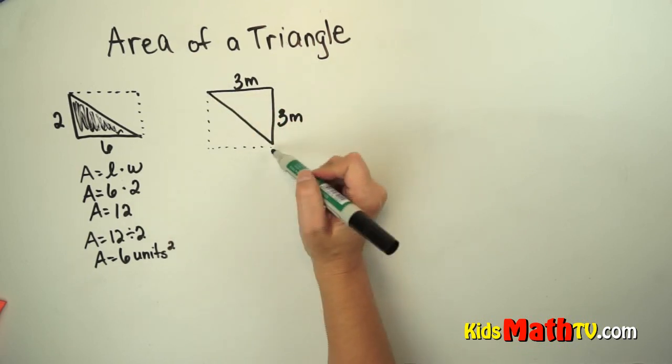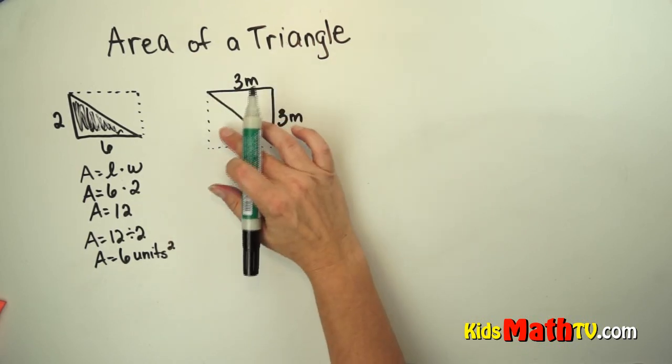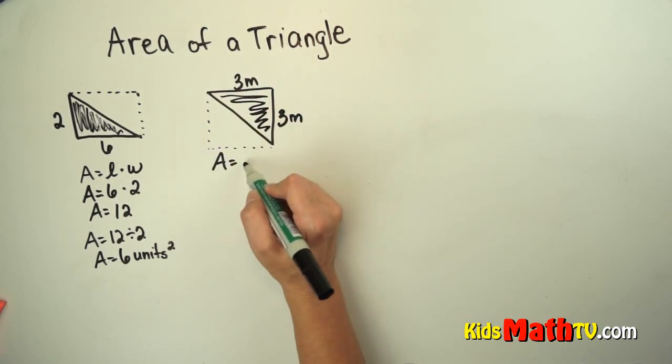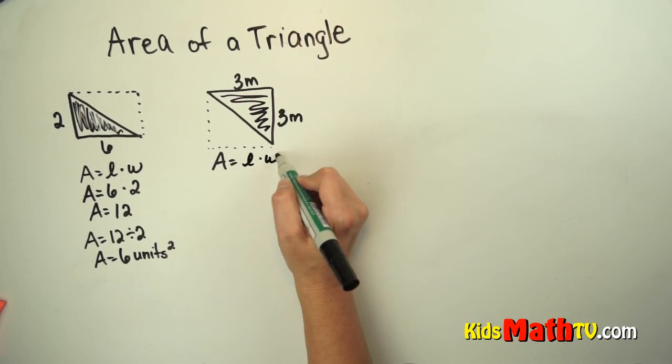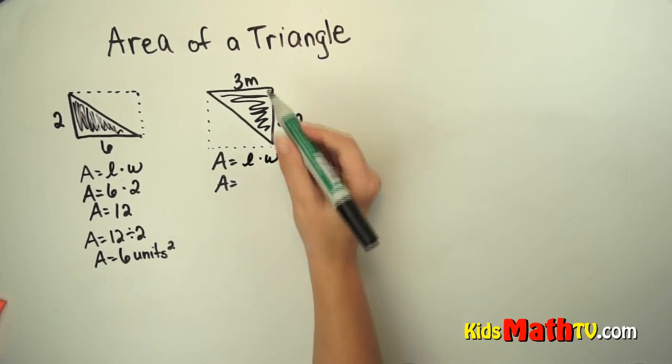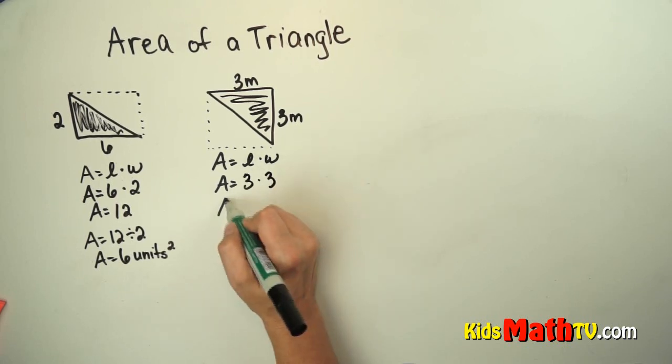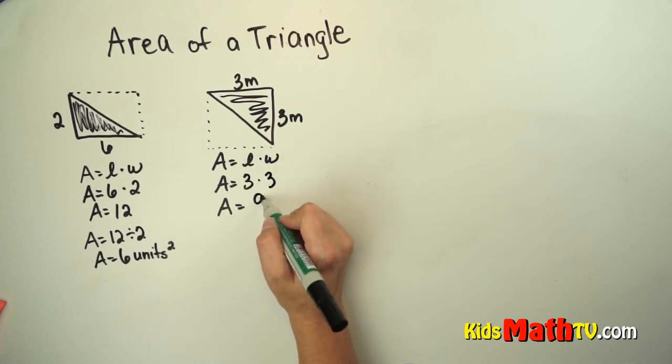So I'm going to find the area of the rectangle first and then split it in half to find just the area of this triangle. The area of the rectangle is length times width. In this case the length and the width are the same, so I do 3 times 3. And the area is 9.